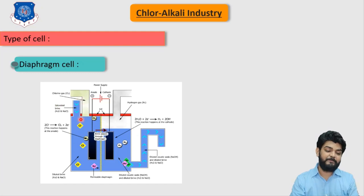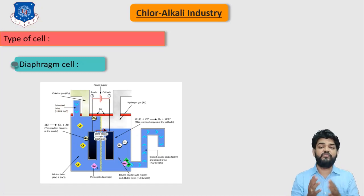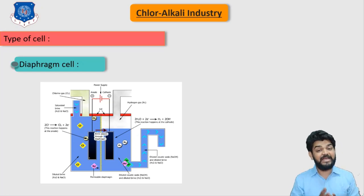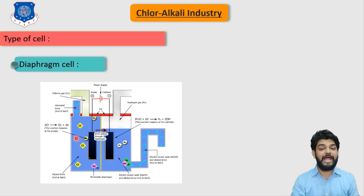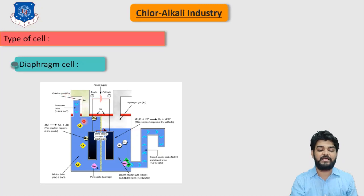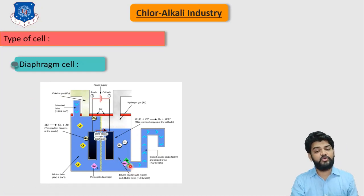When we supply saturated brine — a mixture of NaCl and water — the water decomposes on application of external electricity. Ions are generated and Na⁺ ions can easily pass through the diaphragm to the other side. On the anodic side, chlorine gas is generated. The Cl⁻ ions are liberated out from the outlet and we get cold chlorine gas.